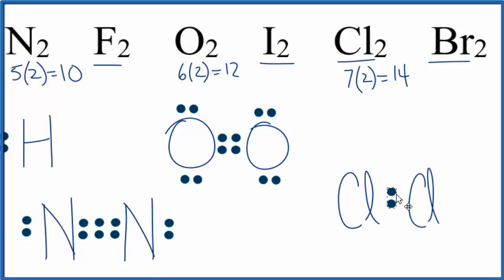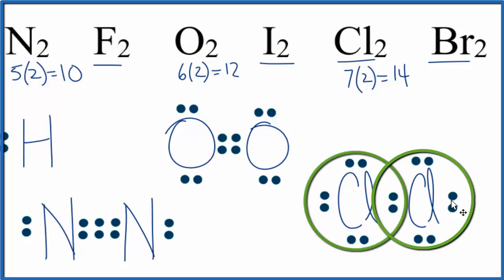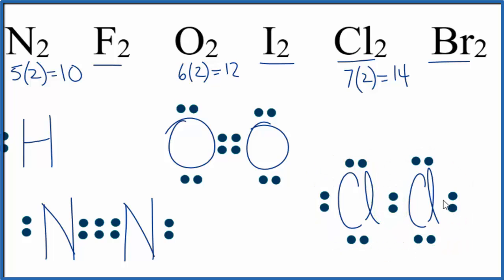We'll put a pair between atoms. That forms our bond there between the chlorine atoms. Then we'll complete the octets around these chlorine atoms until we've used all 14 valence electrons. We've used 12, last two right here. And now we've used all 14 valence electrons, and each chlorine here has an octet. So this is the Lewis structure for Cl2. We have a single bond here.